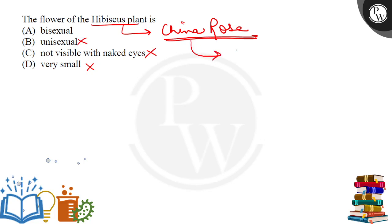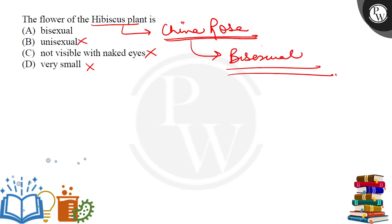China rose, which is a hibiscus plant, is bisexual — both male and female parts are present in one flower. So here the correct answer is Option A, bisexual. Option A is the correct answer.